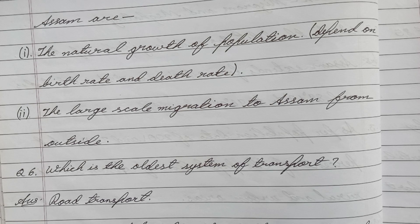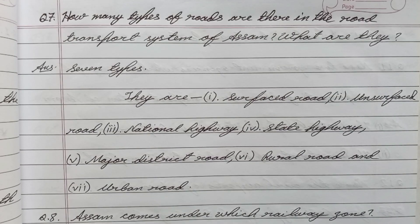Question number six: Which is the oldest system of transport? Answer: Road transport. Question number seven: How many types of roads are there in the road transport system of Assam, and what are they?